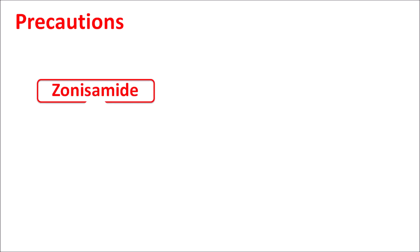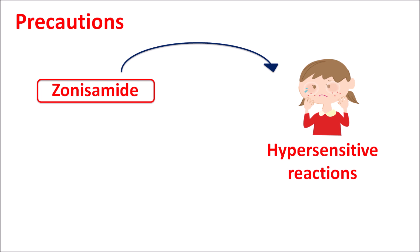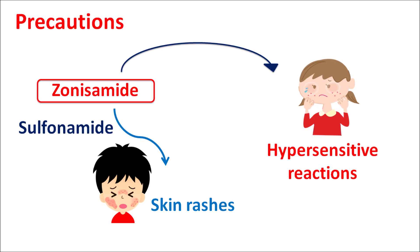Now let us look at the precautions of this drug. One important precaution is that zonisamide can produce hypersensitive reactions. Since this drug is a sulfonamide, it can produce skin rashes, and it can even produce serious skin rashes like Stevens-Johnson syndrome. So whenever these hypersensitive reactions develop, this drug should not be used and should be replaced with an alternative agent.